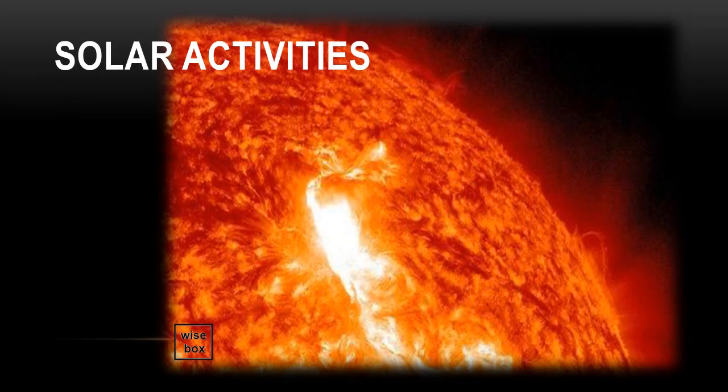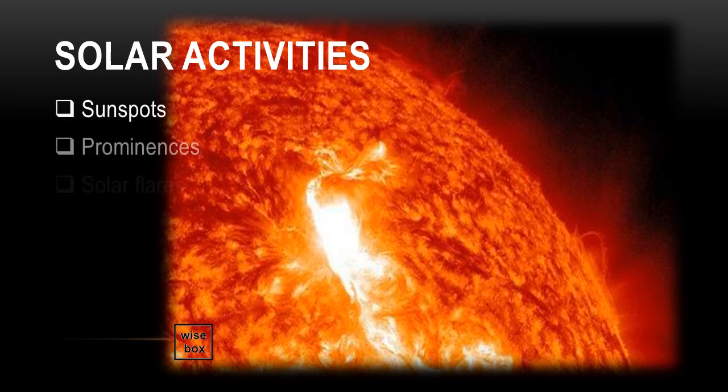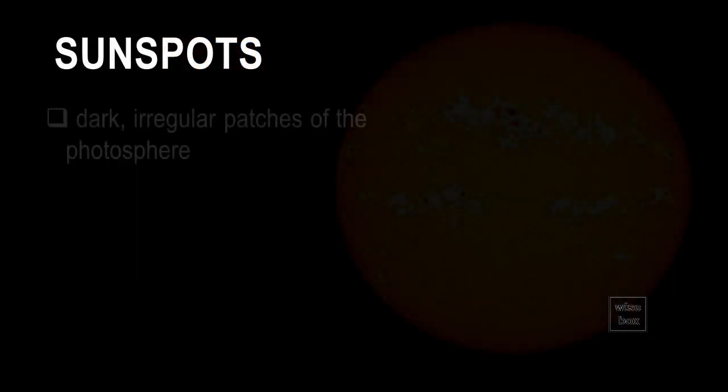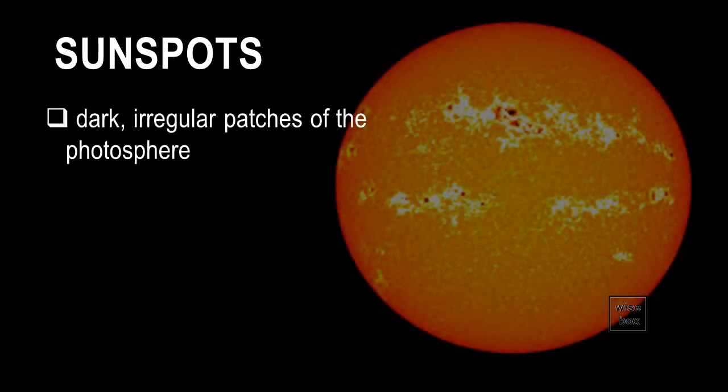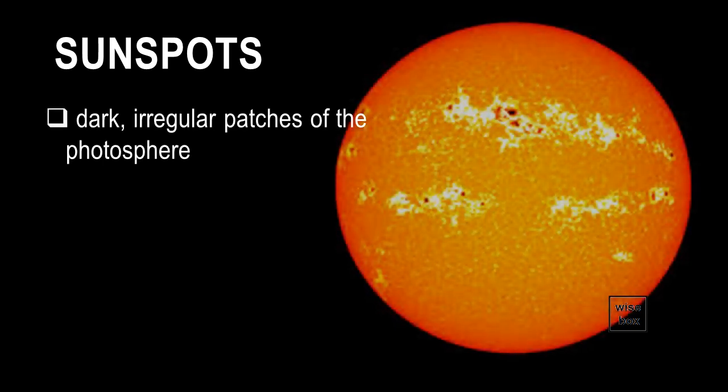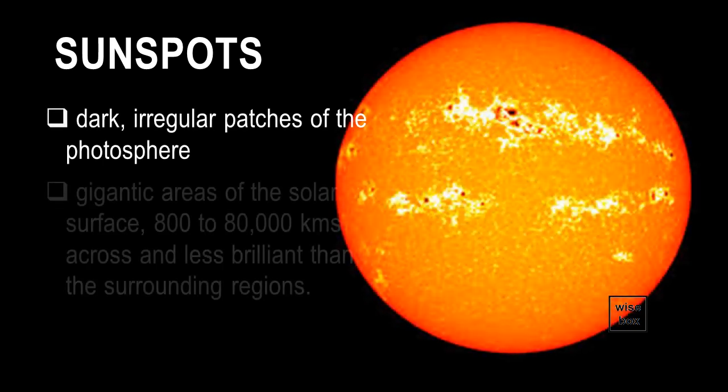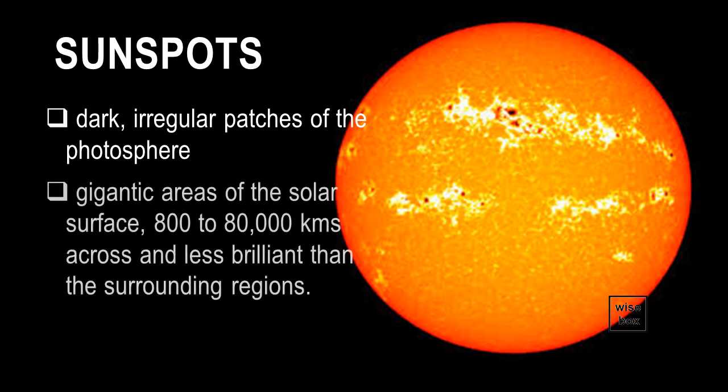There are several solar activities that occur in the Sun. These include sunspots, prominences, and solar flares. The sunspots are dark, irregular patches of the photosphere. These are gigantic areas of the solar surface, 800 to 80,000 kilometers across, and less brilliant than the surrounding regions.